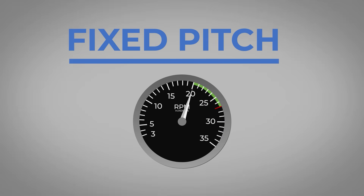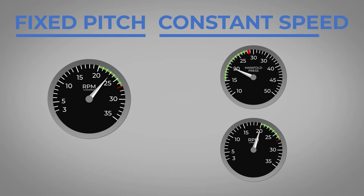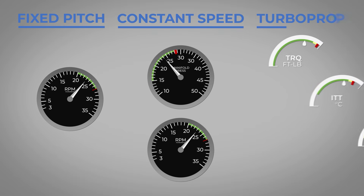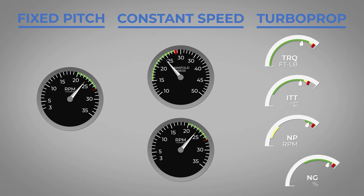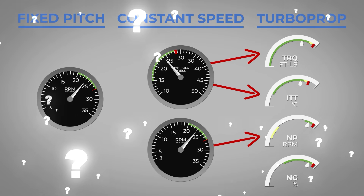In a fixed-pitch propeller, you just have a tachometer showing you RPMs. And then in a constant speed propeller aircraft, you have manifold pressure and a tachometer. Well, in the turbine, there's a little bit more. You still have a gauge showing you propeller RPMs, but it's now instead labeled NP. And manifold pressure is more or less replaced with torque and ITT, but then you also have percent NG in there. So what the heck do all of those mean?